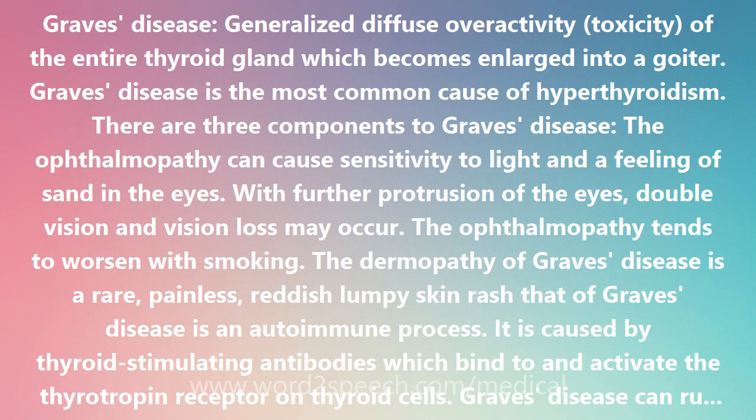Graves' disease can run in families. The rate of concordance for Graves' disease is about 20% among monozygotic identical twins, and the rate is much lower among dizygotic non-identical twins, indicating that genes make only a moderate contribution to the susceptibility to Graves' disease. No single gene is known to cause the disease or to be necessary for its development.